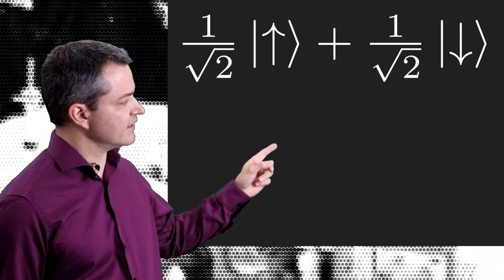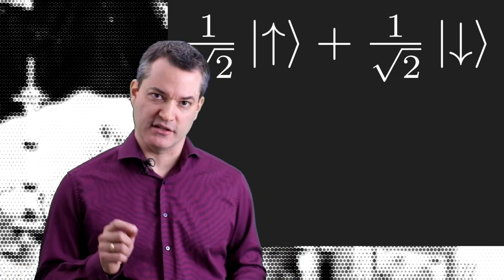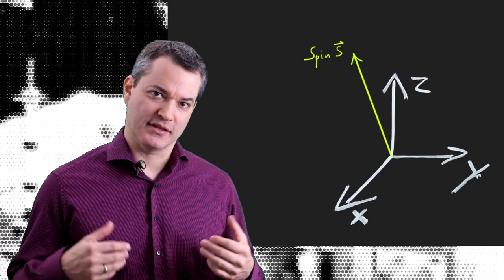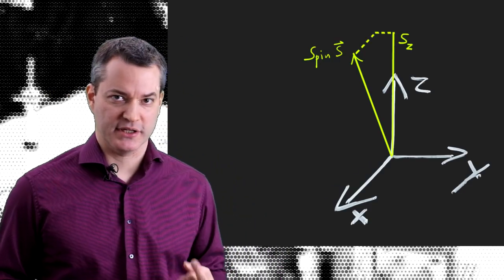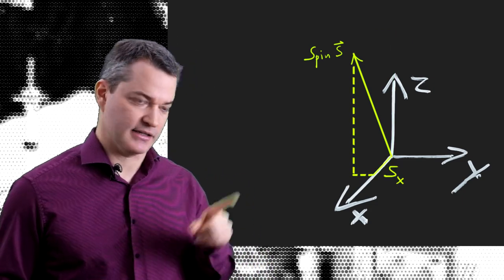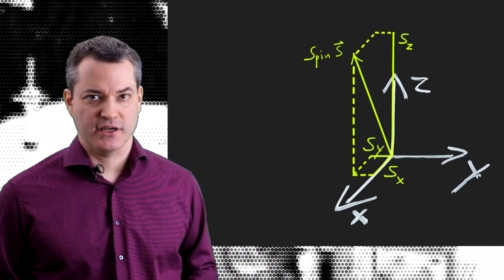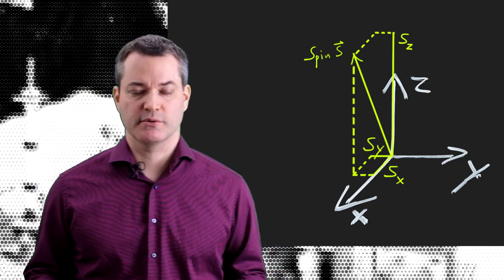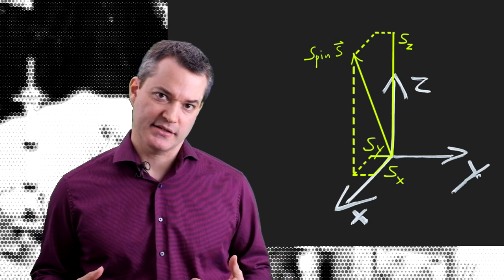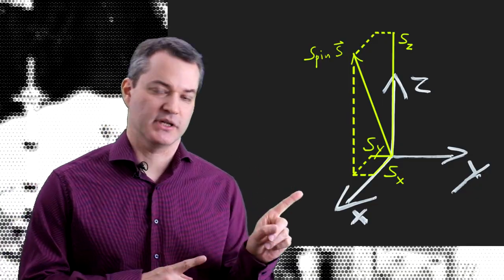However, our final state contains more information than this 50-50 statement, and in this case we can precisely state what this information is about. The quantities complementary to the spin component along the z-axis are the spin components along the x-axis and along the y-axis. Actually, we can consider arbitrary directions, but the complementarity will be most pronounced when we look at axes that are perpendicular to each other. In any case, we can only observe the spin component along a single chosen direction at any particular time.